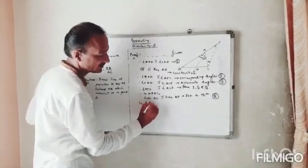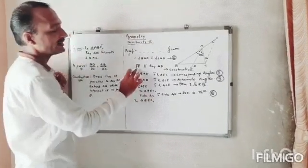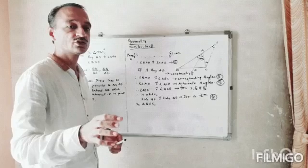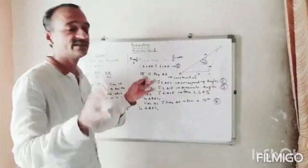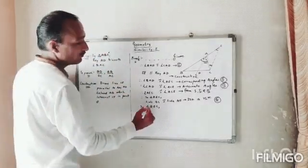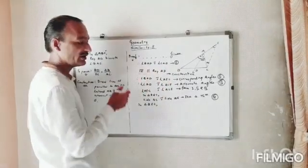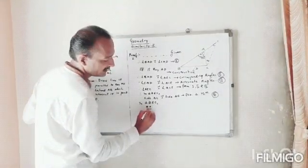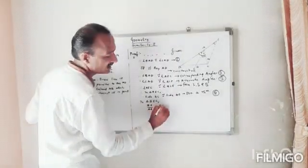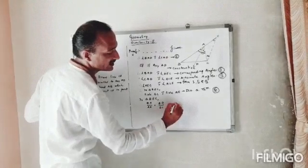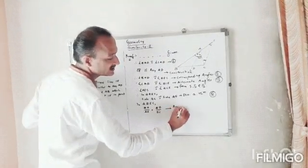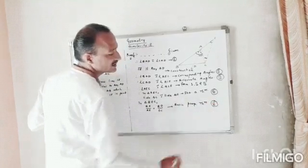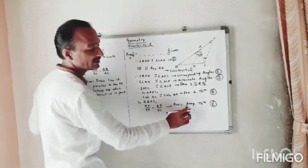Now, in triangle BEC, CE is parallel to AD. In the last lesson I told you: when a line is drawn parallel to a side of a triangle, it divides the other two sides in the same ratio — that is the Basic Proportionality Theorem. So by Basic Proportionality Theorem in triangle BEC: BA upon AE equals BD upon DC. That is statement number 5. Note: no abbreviations are allowed — write the full form, Basic Proportionality Theorem.